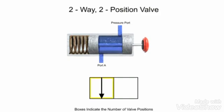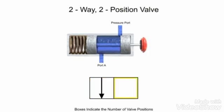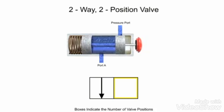A T indicates that a port or way is blocked or closed. This valve's first position has no ports blocked, but its second position blocks both. The second box corresponds to the second position of the valve. Therefore, two T's are added to illustrate the lack of fluid flow in the second position.